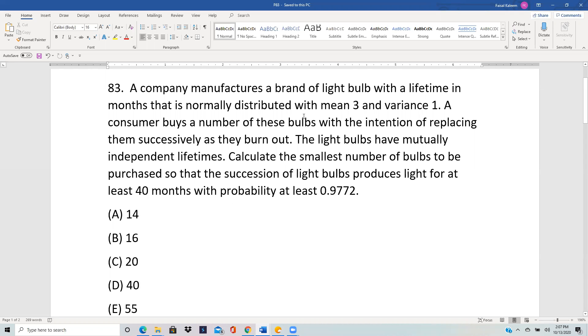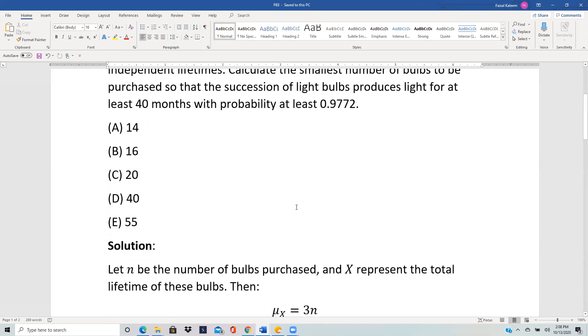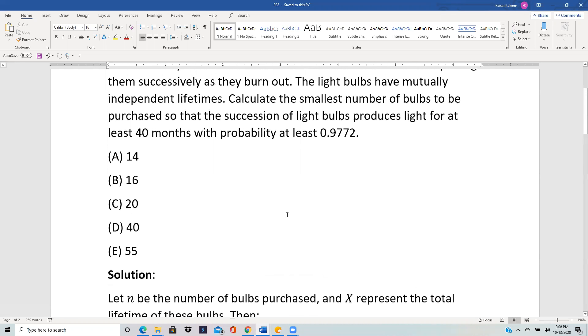What they mean in the opening sentence is that the mean lifetime of each bulb is three months and the variance is one. So we have to find how many bulbs you need so that you get a total of at least 40 months life, and that should happen with a probability of at least 0.9772.